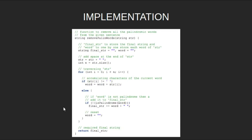Now let's look at the removePalindromeWords function. Initialize the final string and word as empty strings. To the end of the input string, we add a space. n is the size of the string. Now traverse the input string, and if the current character is not a space, we add the character to the word. Finally, as we get a space, we check if the word is a palindrome or not. If not, then add it to the final string and reset the value of word to an empty string. Finally, we will return the final string.